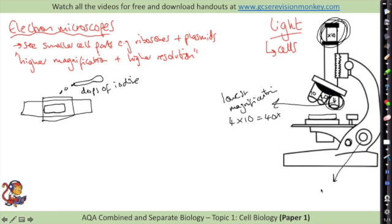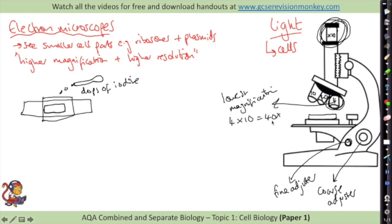We then use our two different adjusters - often on a microscope you'll get a large adjuster and a smaller one. We use the coarse adjuster first to focus onto our image and then the fine adjuster to get a really clear image. Once you've done that you can then change the magnification, increasing it from 40 to 100 times and then 400 times magnification.